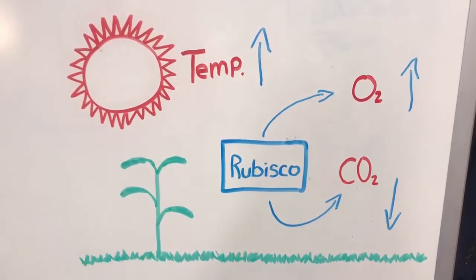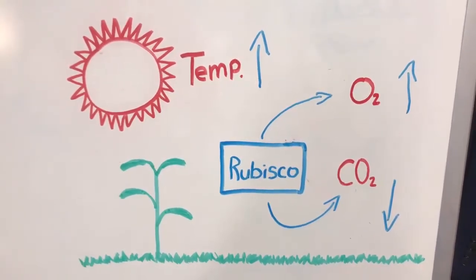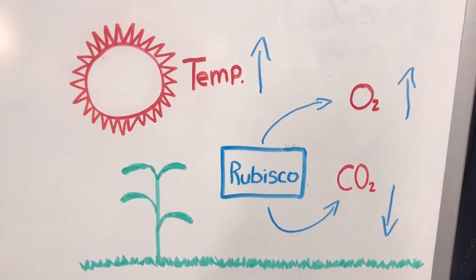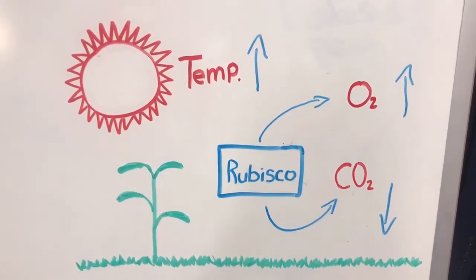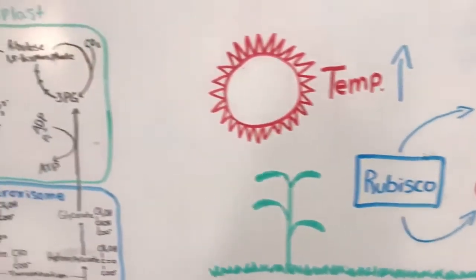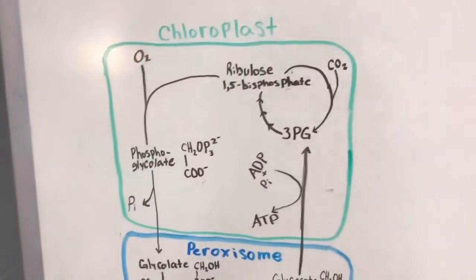Photorespiration takes up oxygen and gives off CO2, unlike how most plants are meant to function. Photorespiration takes place in the chloroplast, peroxisome, and mitochondria.